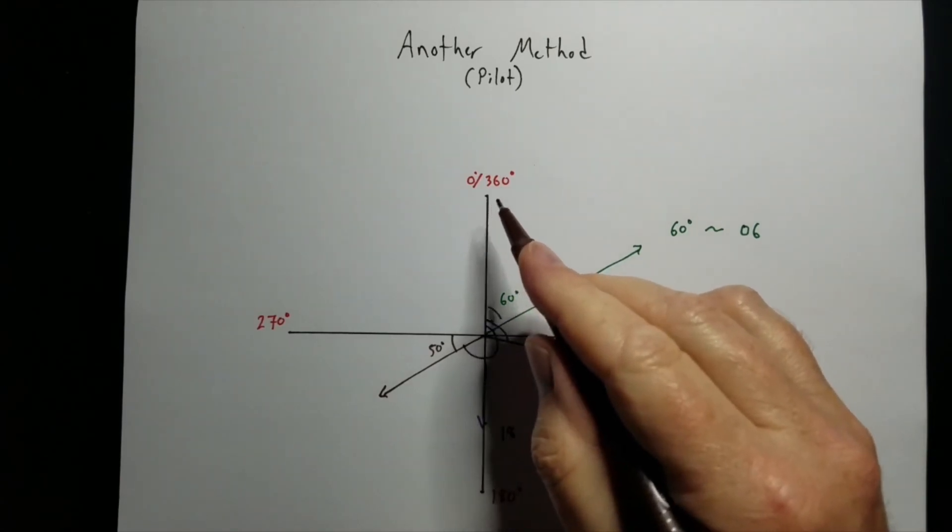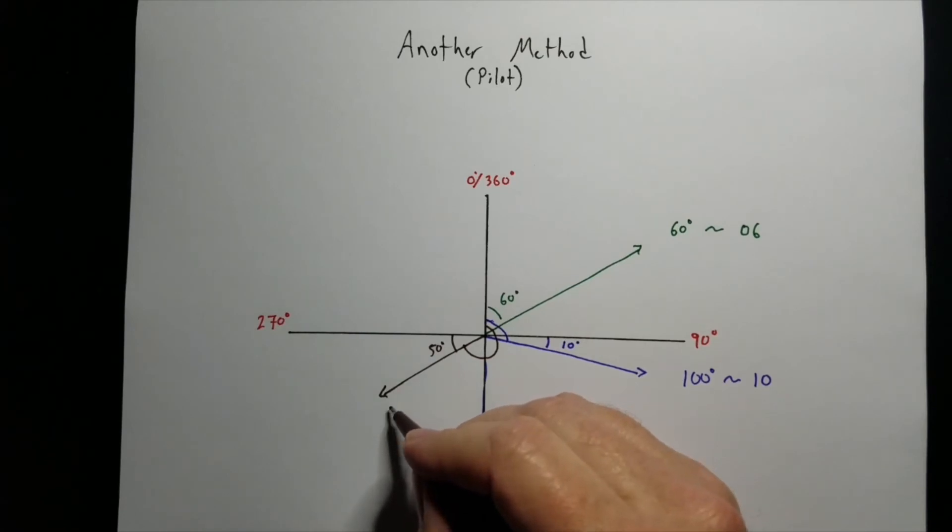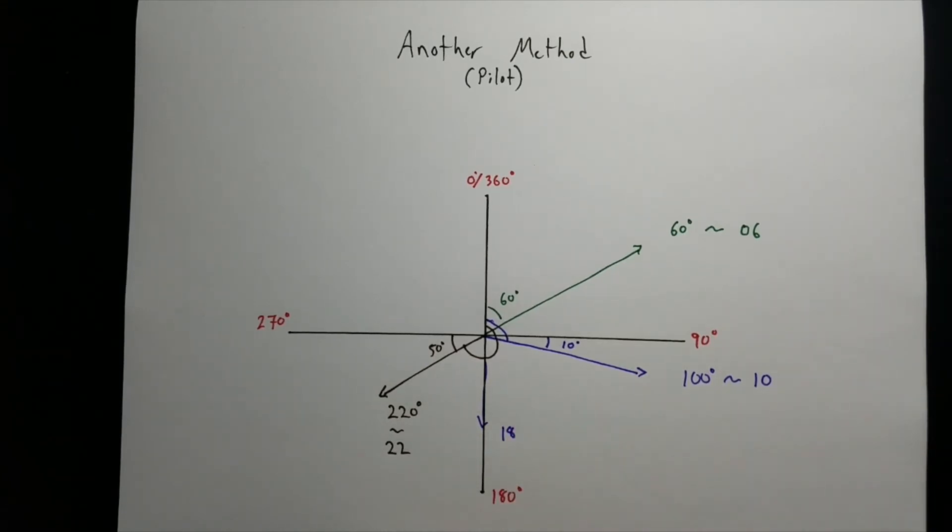So again, you go all the way around to here, just like what we did with the forces, except now north is going to be 0. So we're at 180 plus another 40. So this would be 220 degrees. So that would be runway 22. They simply drop off the bottom, the back end 0.